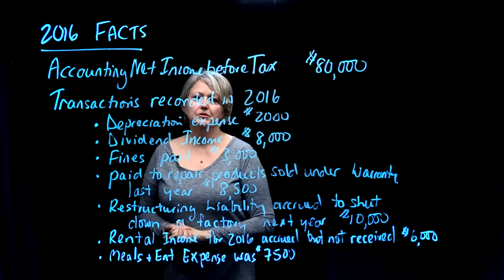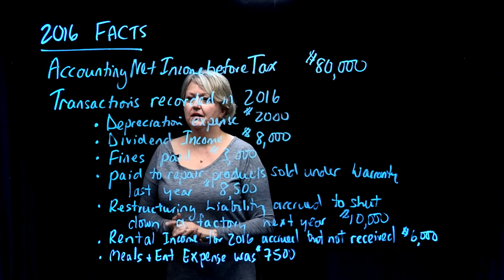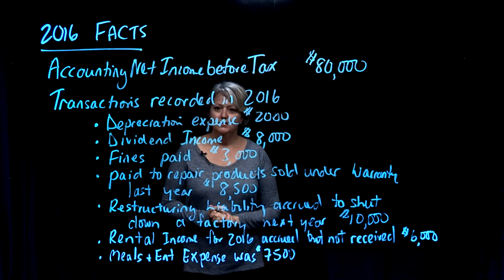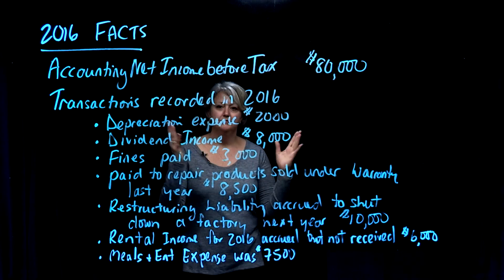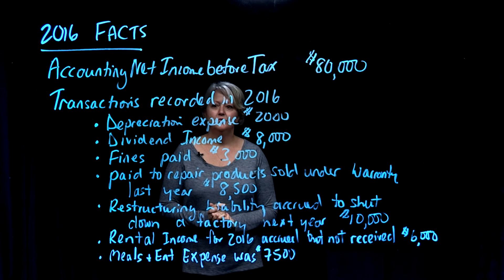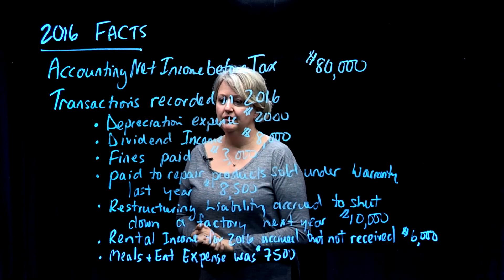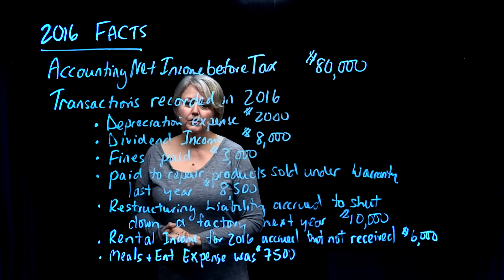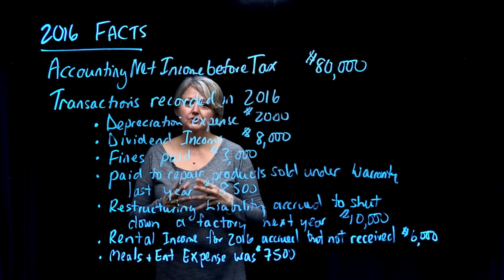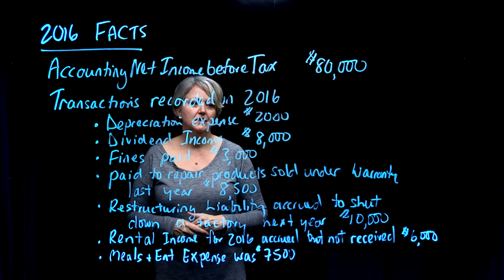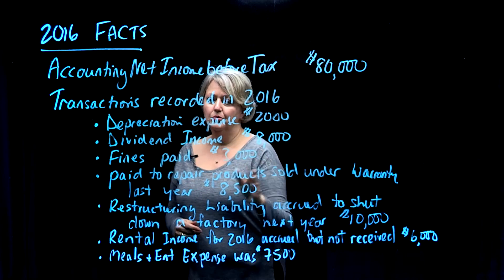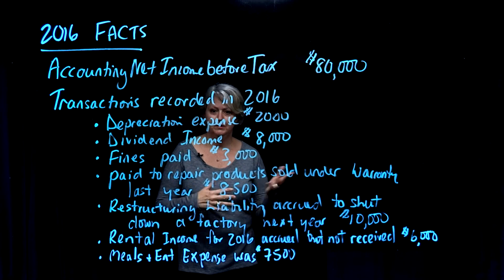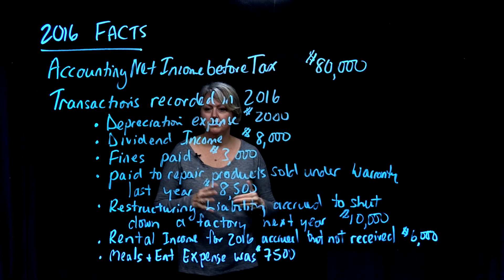Depreciation expense of $2,000 was booked. Dividend income from Canadian corporations of $8,000 has been recorded. There were fines paid of $3,000, which has been expensed in the $80,000 of net income. There were also repairs done to products sold in prior years — we had accrued a warranty liability — and the repairs cost $8,500 this year, charged against the warranty rather than expensed.